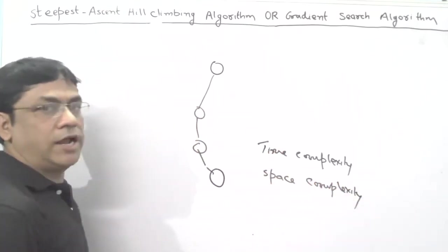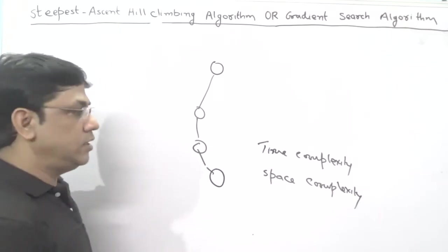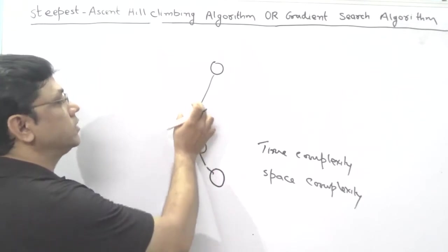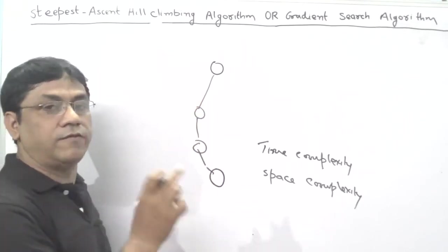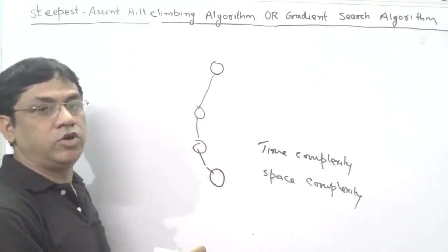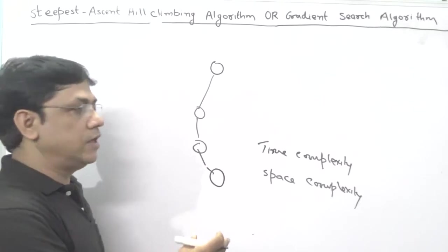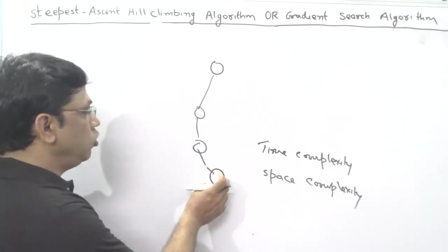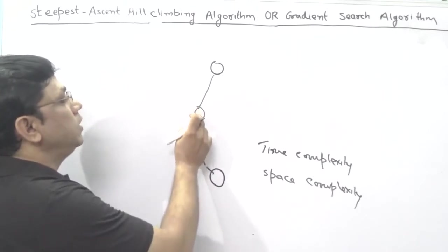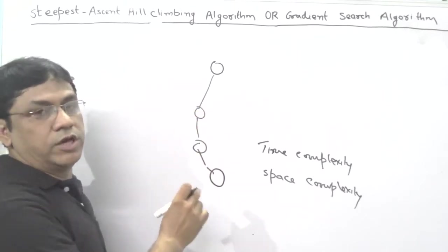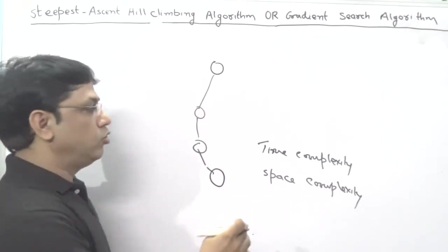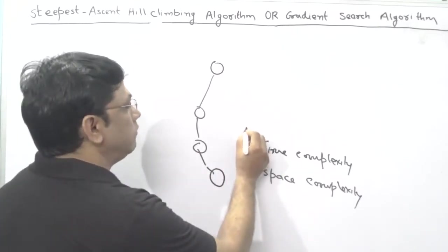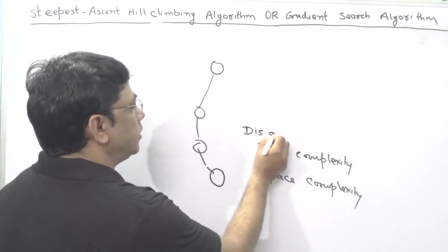How will time complexity increase? Because you have to compare all successor nodes in one shot, so your time complexity will increase. And why will space complexity increase? Because you have to keep all the node values in memory while comparing, so your space complexity will increase.